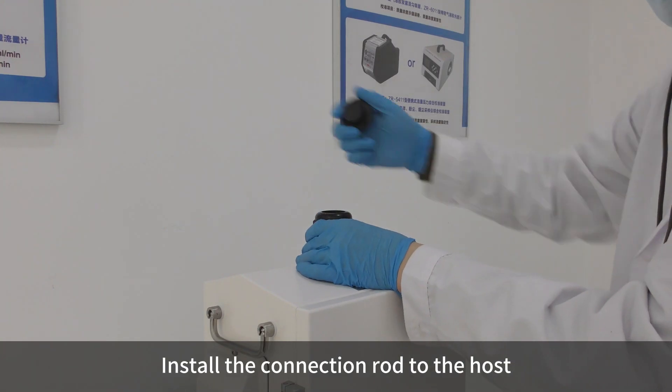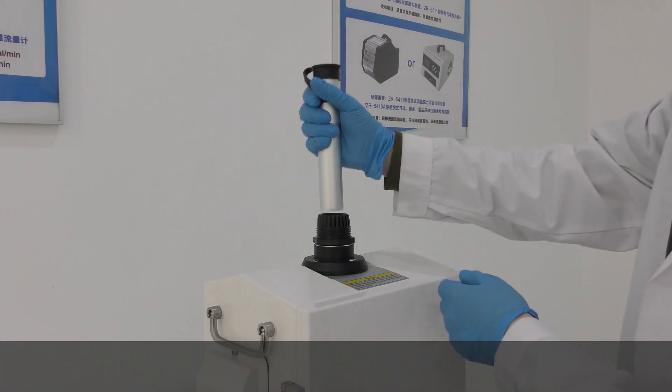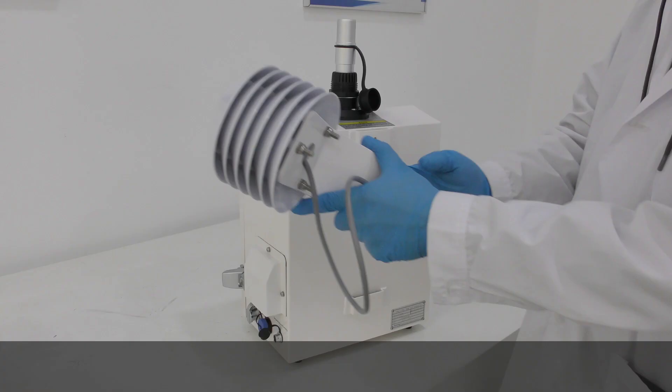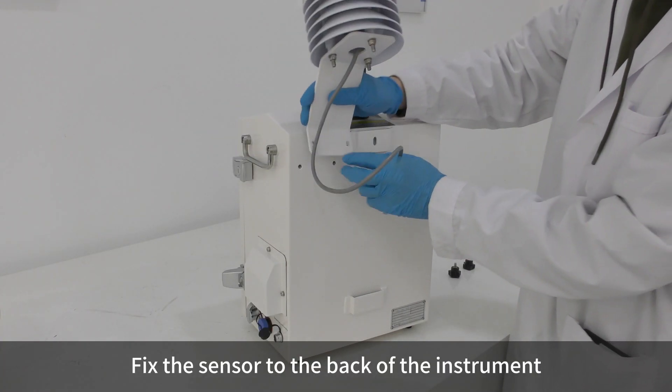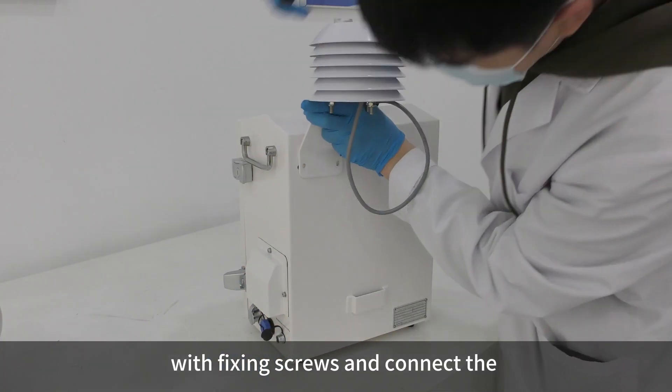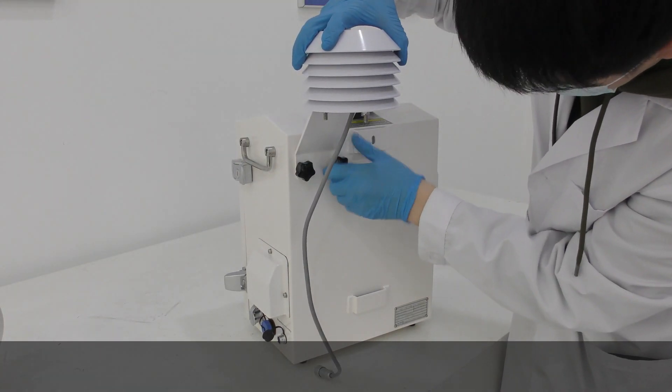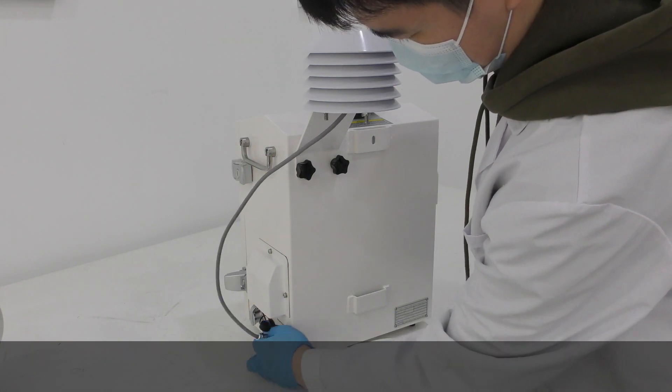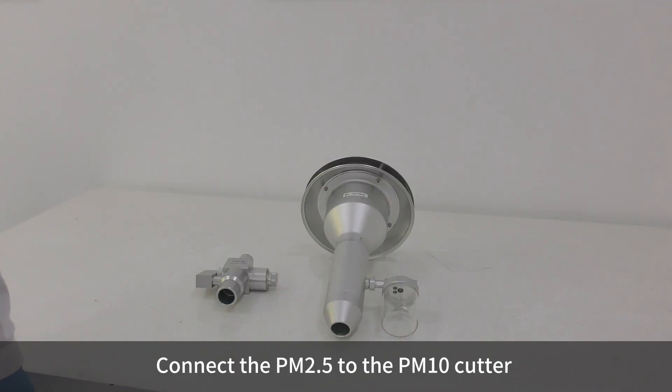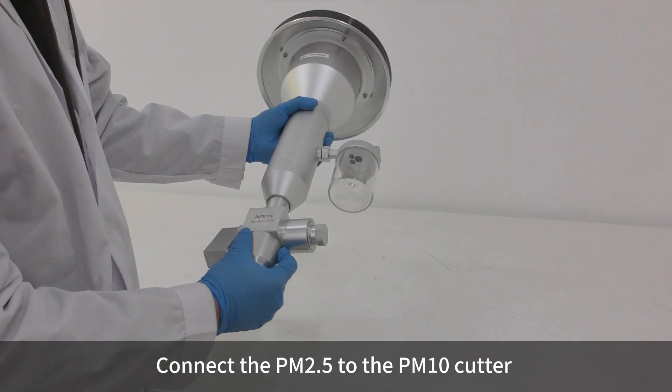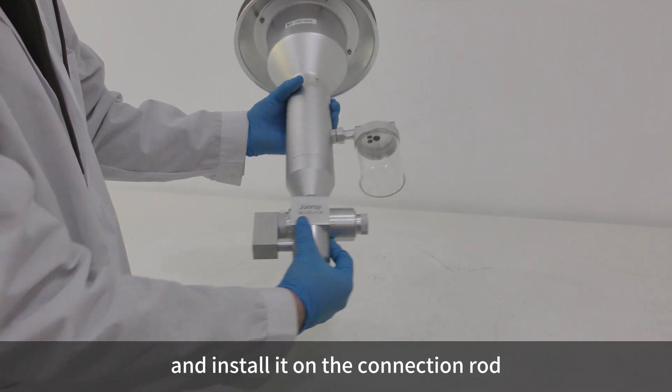Install the connection rod to the host. Fix the sensor to the back of the instrument with fixing screws and connect the communication cable. Connect the PM 2.5 or PM 10 cutter and install it on the connection rod.